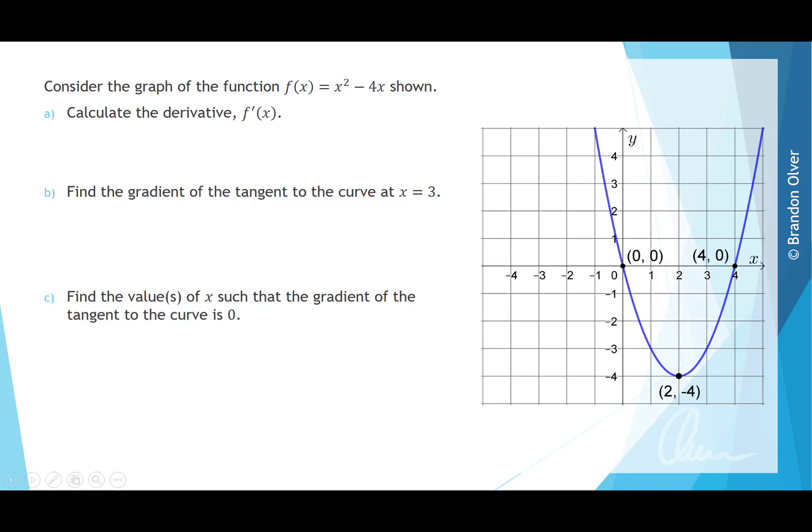Consider the graph of the function f(x) = x² - 4x shown. Calculate the derivative f'(x). To calculate the derivative we can use our rule which says that f'(x) is going to equal, and we take the power 2 here and multiply it out the front, so we're going to have 2 times x to the power of, and we take 1 off the power, so that's just going to be 2x.